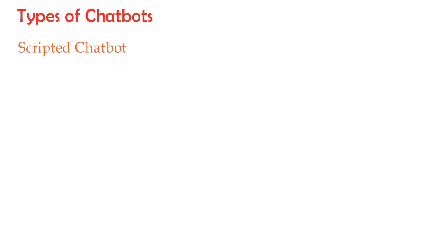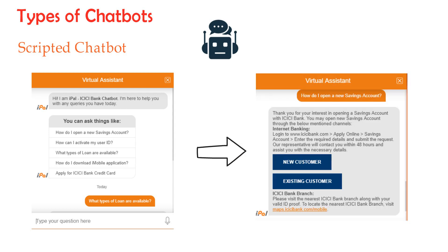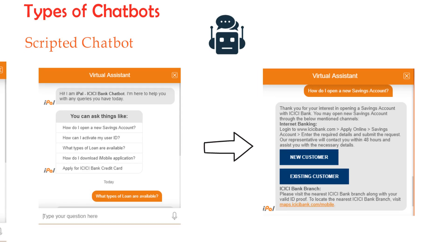Types of chatbots. First, the scripted chatbot. Conversations with this type of chatbot can only follow predetermined paths. At each step in the conversation, the user will need to pick from explicit options to determine the next step in the conversation.